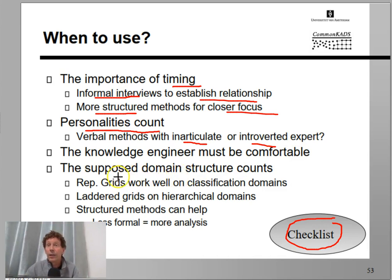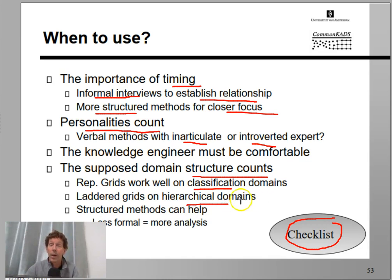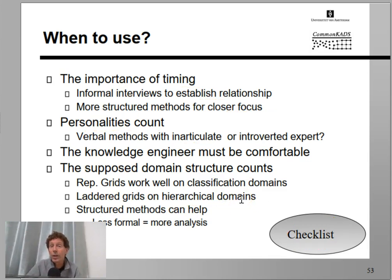You're not just interested in lists of things — you want structure, because your knowledge-based system is going to need this structure. Repertory grids work well for classification domains, lettering works well for hierarchical domains, and so on. Be aware that you make the right choice of methods.